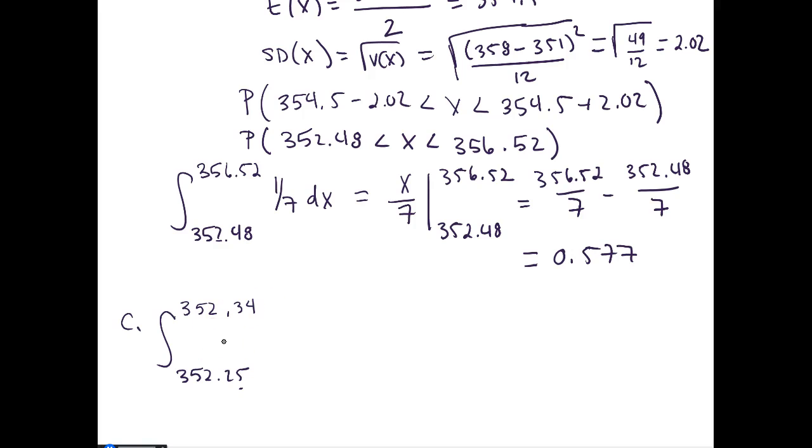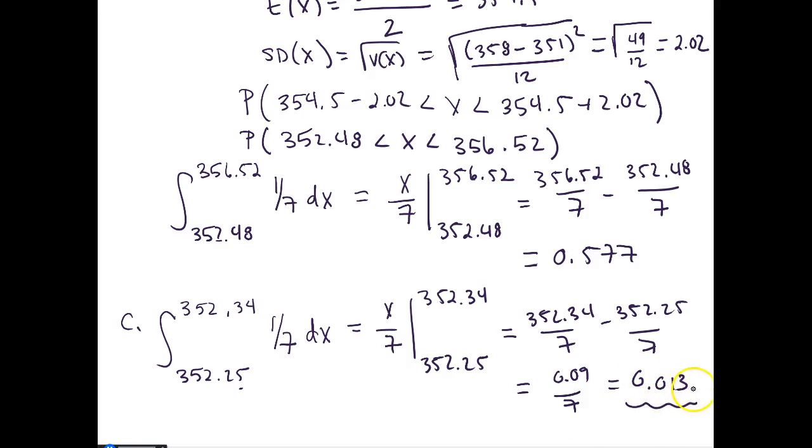We can find the probability of a student getting the exact same value this way. We integrate over our probability density function, so this equals X/7 from 352.25 to 352.34, which equals 352.34/7 minus 352.25/7, which equals 0.09/7, which equals 0.013. So it's a very small likelihood that a student would actually get the exact same value.